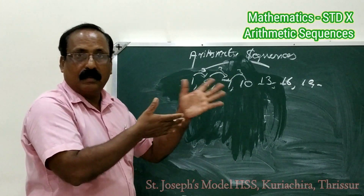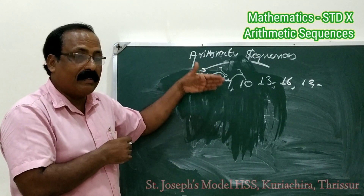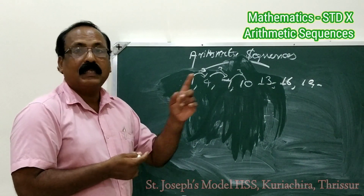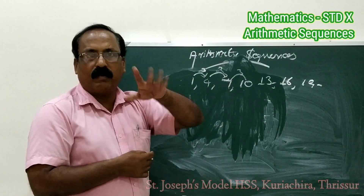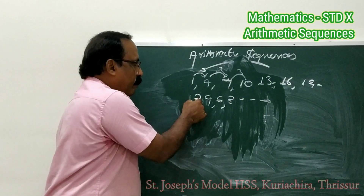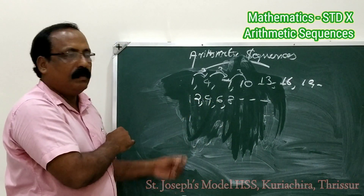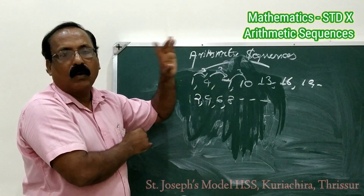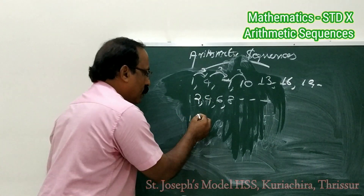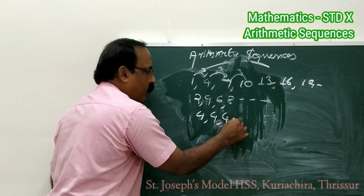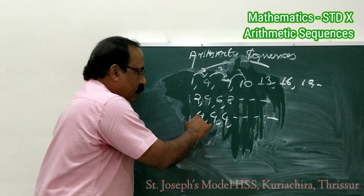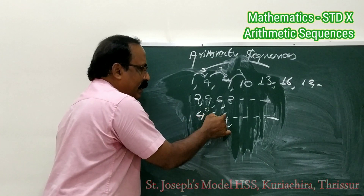The definition: in a sequence, each term is subtracted from its succeeding term — meaning the next term — and we get a constant number. Such a sequence is known as an arithmetic sequence. For example, 2, 4, 6, 8, etc. is also an arithmetic sequence because the difference is a constant 2. The name of this constant number is called the common difference. Also, 4, 4, 4, 4, etc. is also an arithmetic sequence because the common difference is 0.